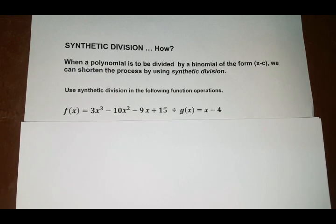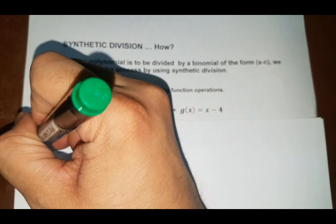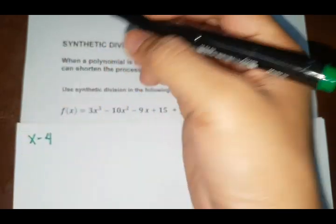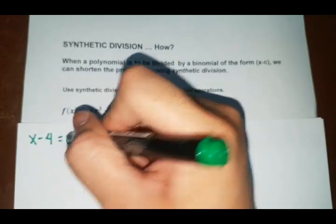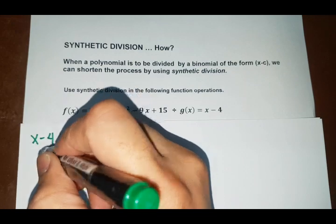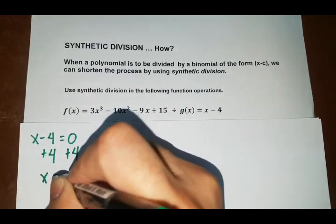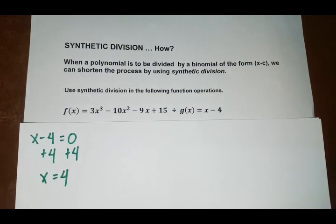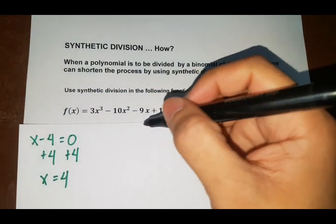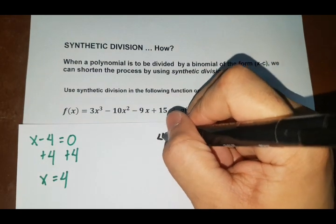Okay, so the first step that you are going to do here is to equate x minus 4 to 0. So x minus 4 equal to 0, so x is equal to 4. Okay, so we are going to use 4 to our synthetic division here.